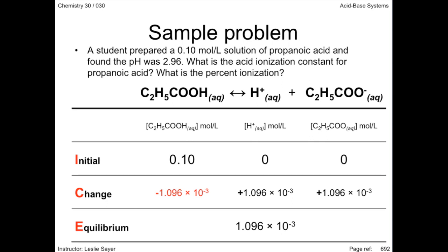The propanoic acid concentration decreased by the same amount, again because of the 1 to 1 mole ratio. Now we have all the changes to the initial concentrations. We can determine the equilibrium concentrations.